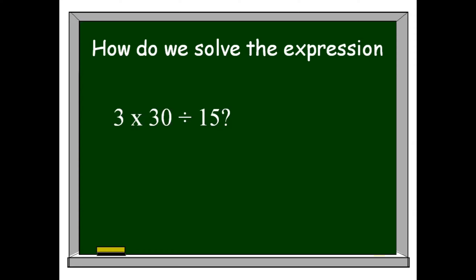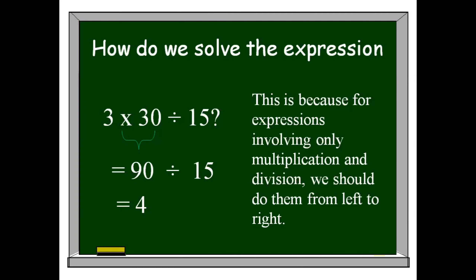How do we solve the expression 3 times 30 divided by 15? A: 4, or B: 6? Let's solve. First, we're going to multiply 3 and 30. 3 times 30 is 90, and then we're going to divide it by 15. 90 divided by 15 is 6. The correct answer is 6. This is because for expressions involving only multiplication and division, we should do them from left to right.